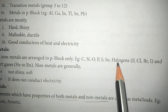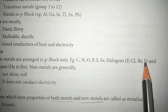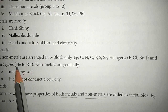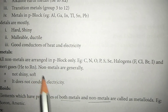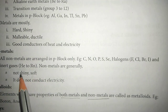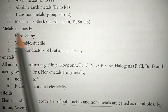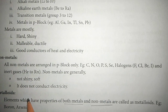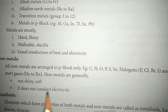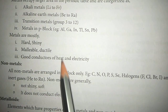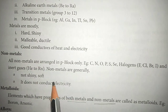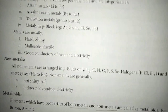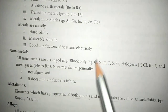Examples of non-metals include halogens — fluorine, chlorine, bromine, iodine — and inert gases. Metals are good conductors of electricity and heat, while non-metals are not. This is how we differentiate metals and non-metals.